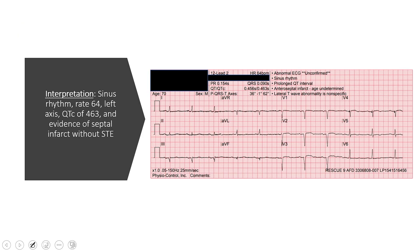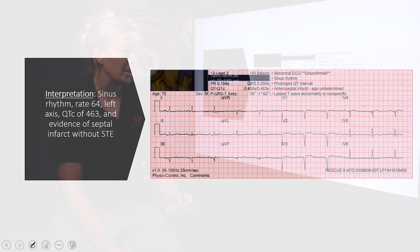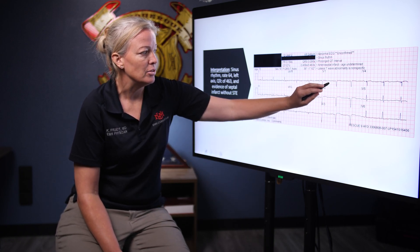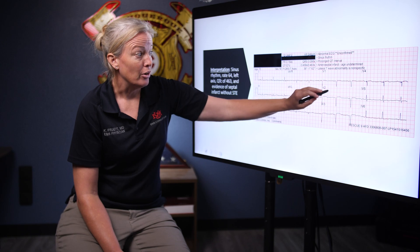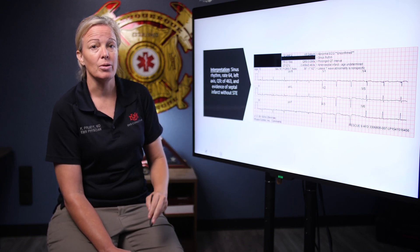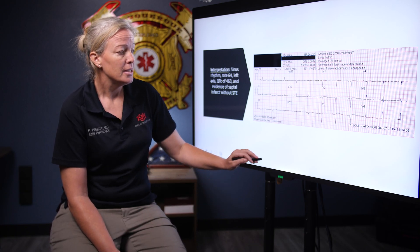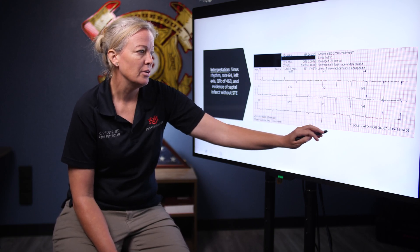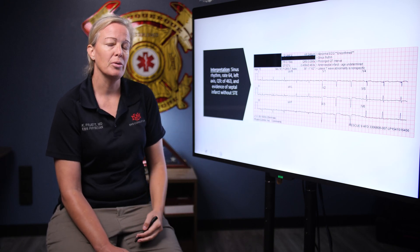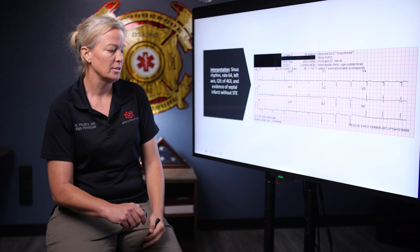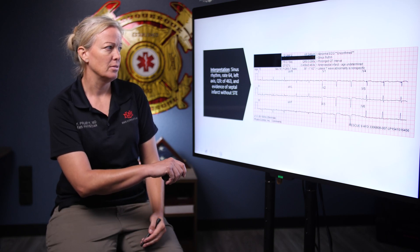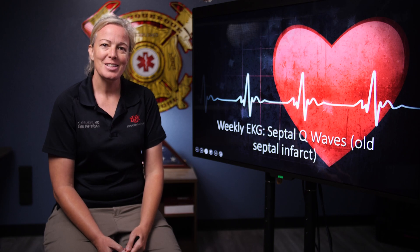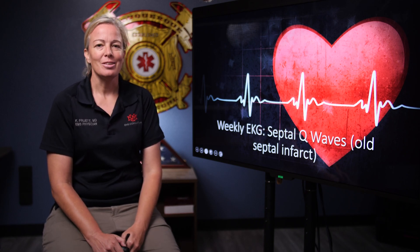Taking another look at our initial 12-lead: we've got a normal sinus rhythm at a rate of 64 with a leftward axis. We're seeing a little bit of QT prolongation and pathologic Q waves — these are greater than one box wide and greater than two boxes deep. Remember, any Q wave in V1 through V3 is not normal. This gentleman doesn't look like he's having an acute MI — no ST elevation and no reciprocal changes. I would call this probably an old septal infarct with those pathologic Q waves in the septal leads. That's it for today. I hope that was helpful. Please join us next time for our next weekly EKG.